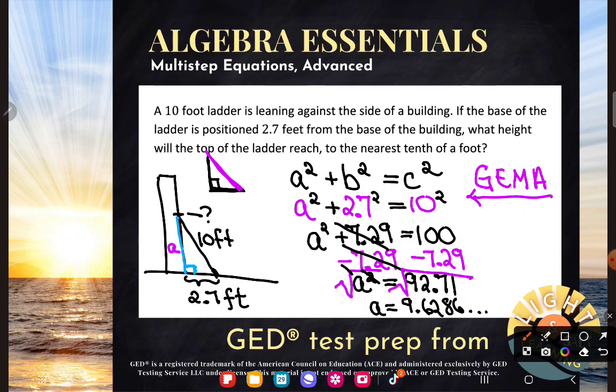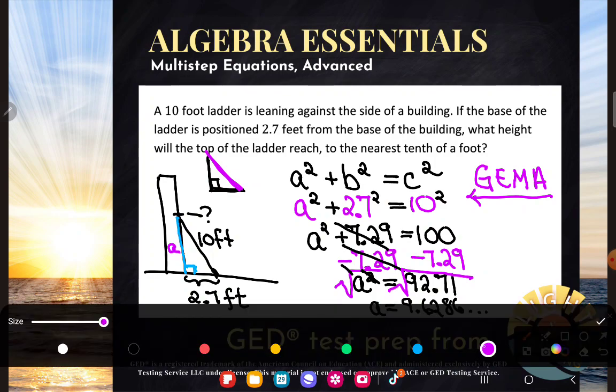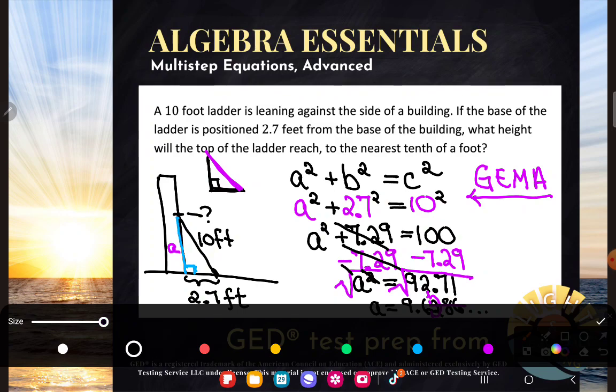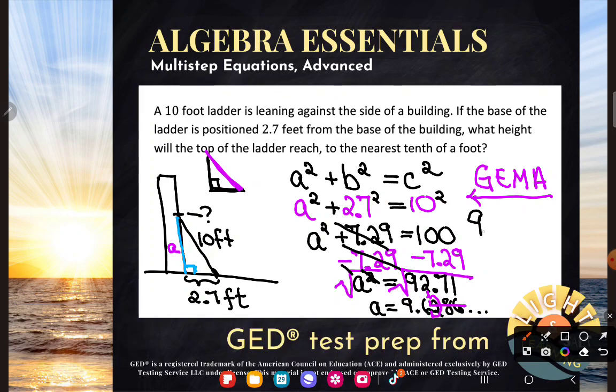Let's see. What height will the top of the ladder reach? Ah, to the nearest tenth of a foot. We want one decimal place. Boom, boom, boom. Consider the next number, the one you're about to throw away. It's a two. It's not big enough to matter. And so I will say, hey, that's about 9.6 feet up. Beautiful.